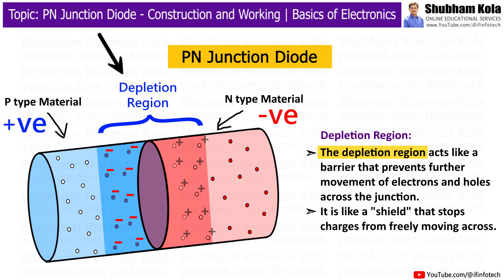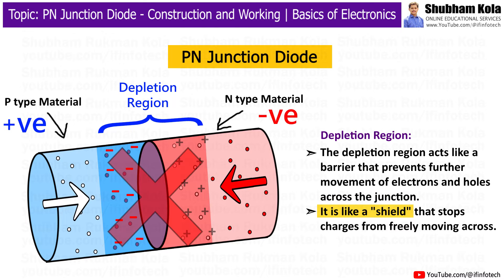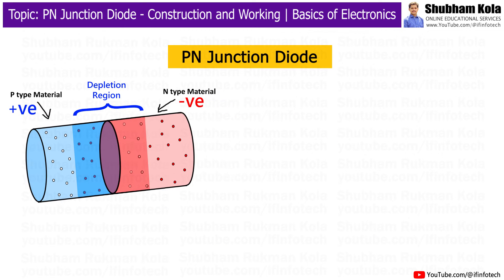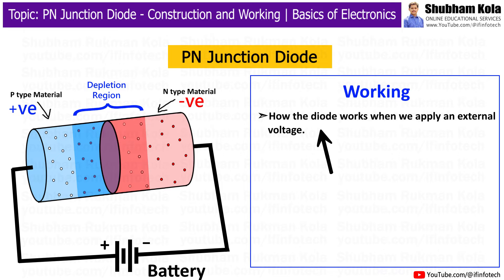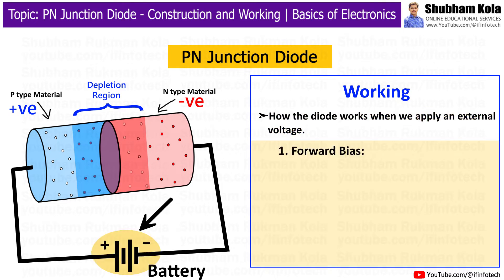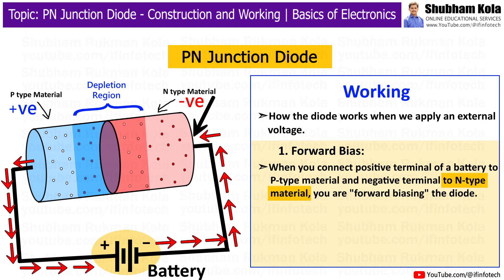This area is called the depletion region because it has no mobile charge carriers. The depletion region acts like a barrier — like a shield — that prevents further movement of electrons and holes across the junction. Now we will see the working of the P-N junction diode. When we apply an external voltage, we connect the positive terminal of a battery to P-Type Material and the negative terminal to N-Type Material, which is called forward biasing the diode.